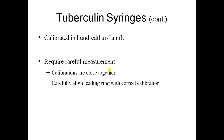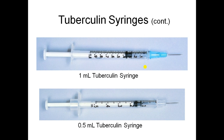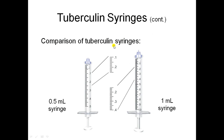Tuberculin syringes are calibrated in hundredths of a milliliter, whereas insulin syringes are calibrated in units. Careful measurement is required because the calibration markings are close together. The tuberculin syringe comes in 0.5 ml and 1 ml sizes. The 1 ml tuberculin syringe is mostly used for children or when a very small dose is needed.